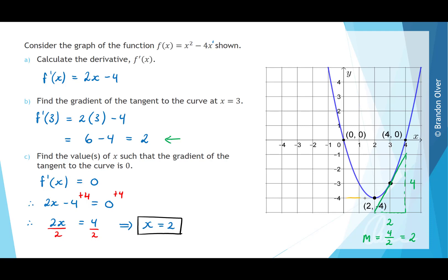And on our graph that occurs at this point here where we can see that we have a run but no rise along that tangent. That's also called a stationary point and we'll be exploring those more throughout the course.